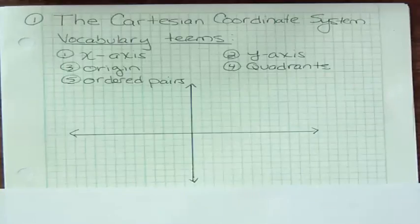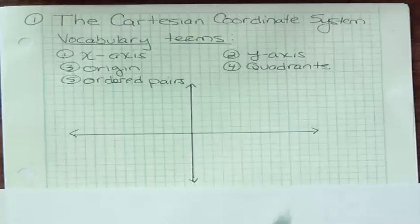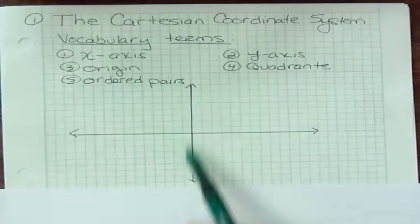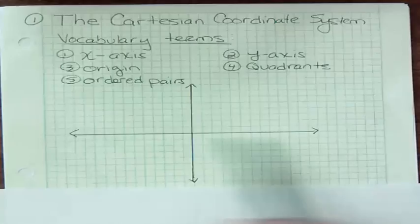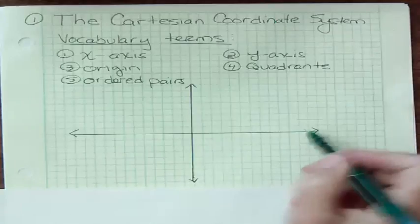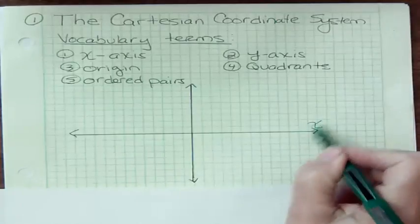So some vocabulary terms that we all need to be aware of. First of all, x-axis. When you have a Cartesian coordinate system, you have an axis running vertically and horizontally. So the one that's horizontal is the x-axis.